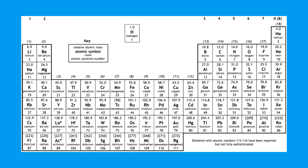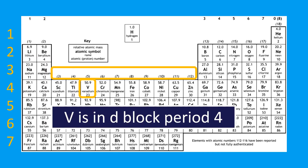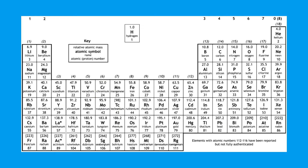Last example — vanadium. Vanadium doesn't have a group number because it's in the d block. D block elements aren't assigned to any specific group, so we call it a d block element. We can identify its period though — vanadium is in period four. So vanadium is a d block, period four element.